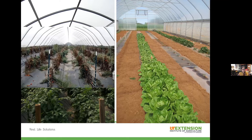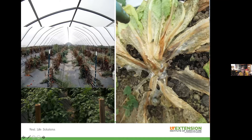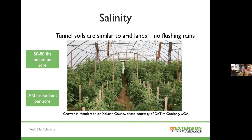We either have to move the tunnel itself to new land or completely rotate out of a crop like tomato for many years. With lettuce we see a similar thing — over time we see white mold, also known as sclerotinia drop. Both of these diseases are soil-borne and remain in the soil for a long time, with overwintering structures. There are plenty of other diseases that can come in as well, so disease is a key reason to rotate even in a tunnel situation.